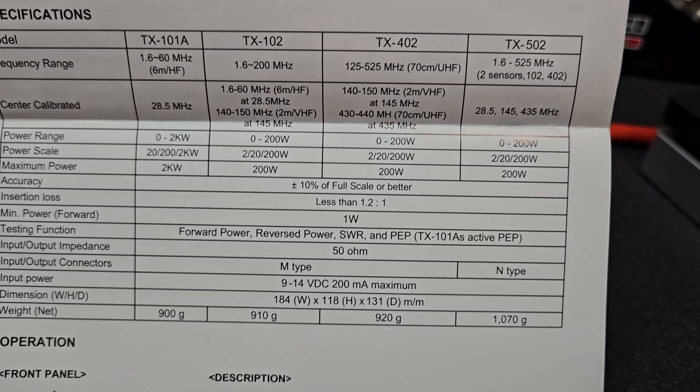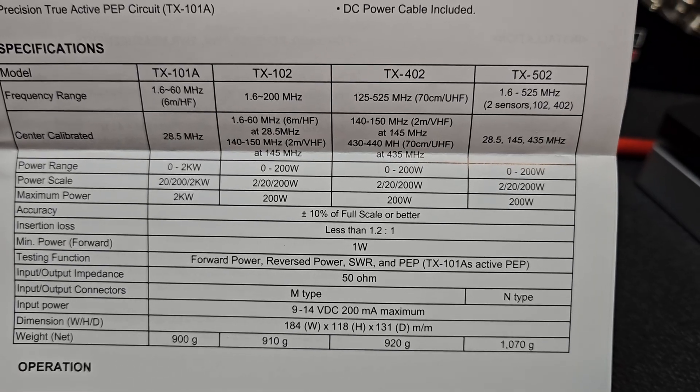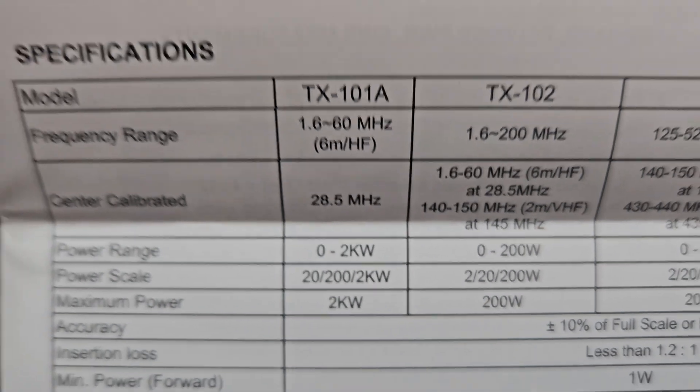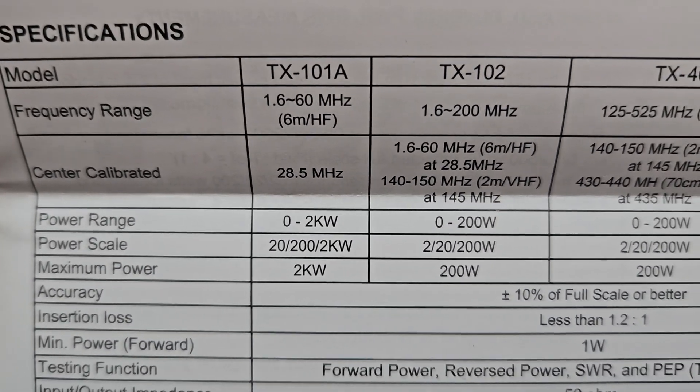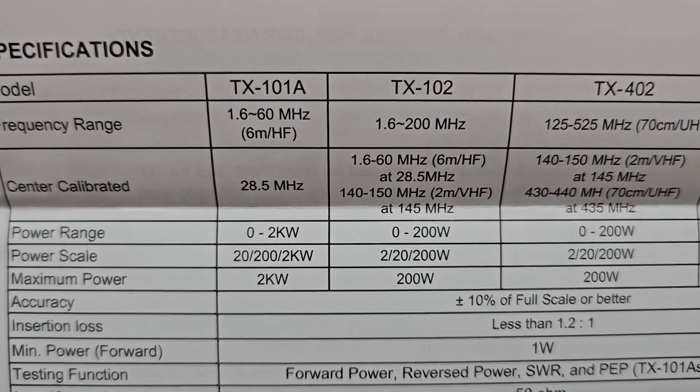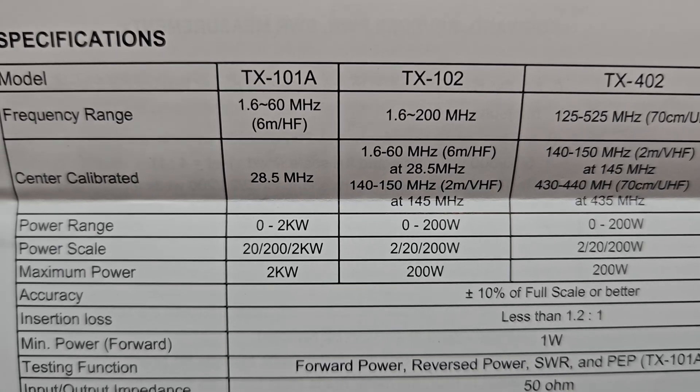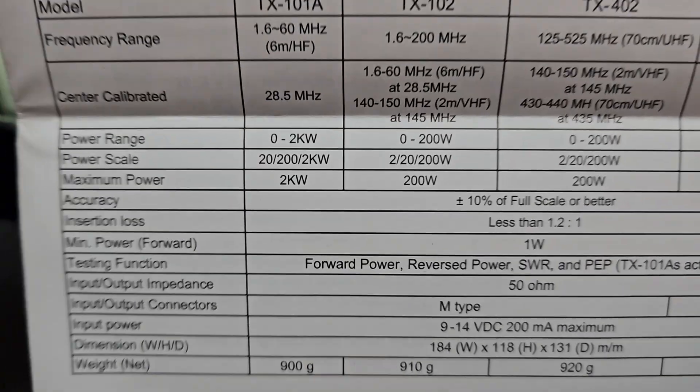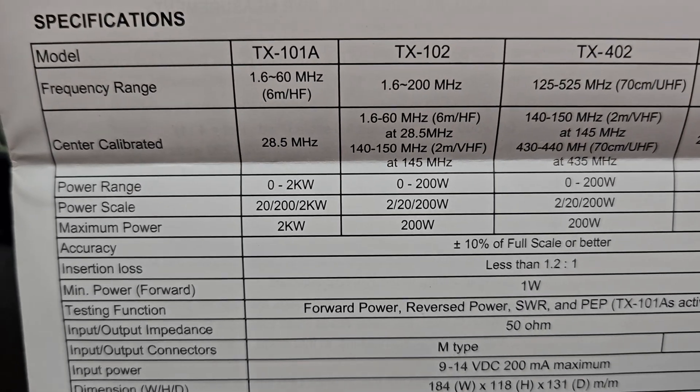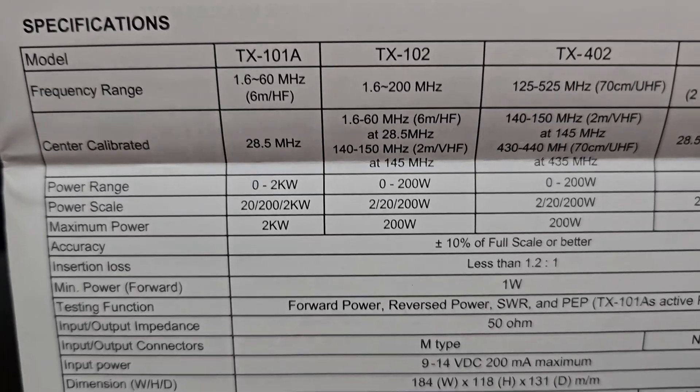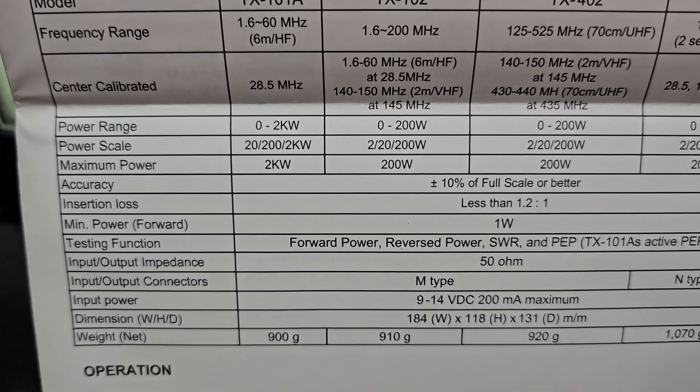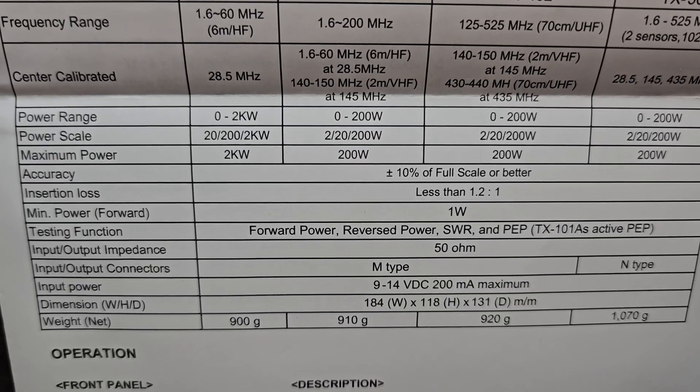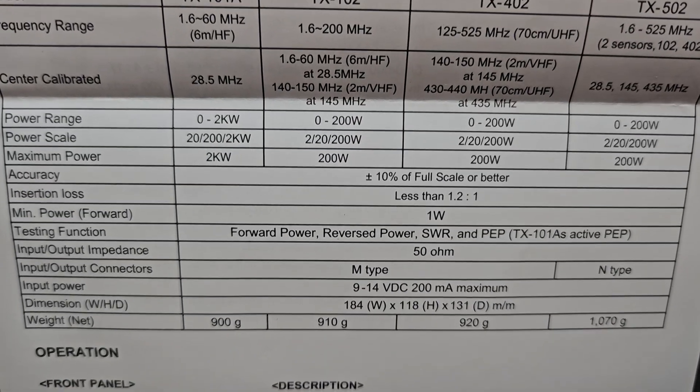You can easily see all the specifics of the models. The one we're talking about today is the far left column. It's center calibrated at 28.5 megahertz, so that's where the calibration is done. As you go lower in the bands, it might not be quite as accurate. We have an accuracy of plus or minus 10 percent of full scale or better.